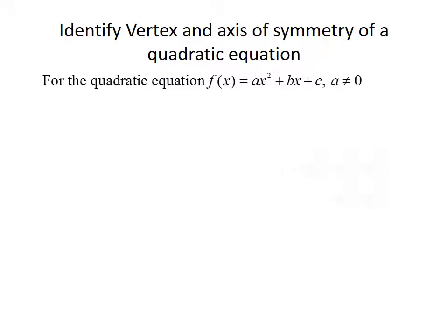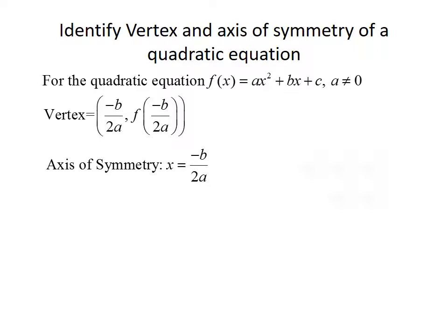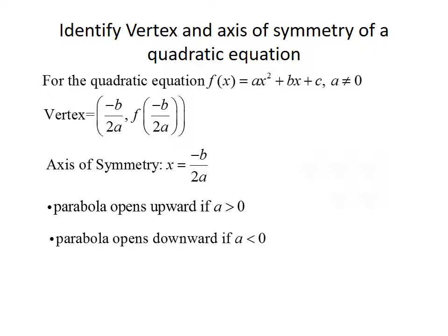Next, we want to identify the vertex and axis of symmetry of a quadratic equation. For f of x equals ax squared plus bx plus c, where a is not zero, the vertex is the point negative b over 2a and the function value at negative b over 2a for the y coordinate. The axis of symmetry is x equals negative b over 2a. The parabola opens upward if a is greater than zero, and downward if a is less than zero.